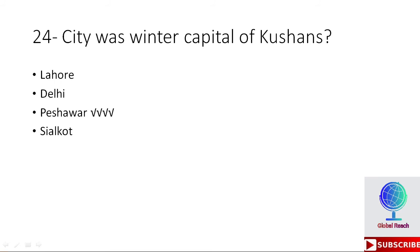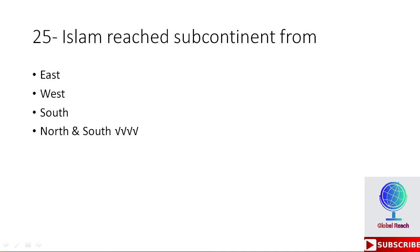MCQ 23: Which city was the summer capital of Kushans — Peshawar, Lahore, Kandahar, or Kabul? The right option is Kabul. MCQ 24: Which city was the winter capital of Kushans — Lahore, Delhi, Peshawar, or Sialkot? The right option is Peshawar. MCQ 25: Islam reached the subcontinent from — east, west, south, or north and south? The right option is north and south.